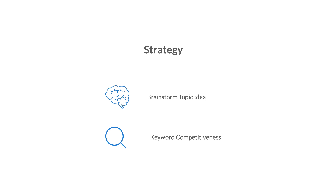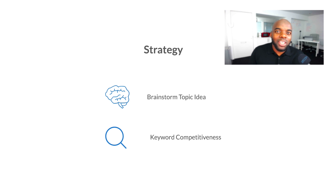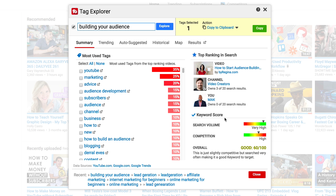Let's recap the strategy I now use to create my videos. First, brainstorm your ideas — this is very important. Some YouTubers just start creating videos, and that works if you have a large audience, but for those of us trying to build an audience we need to create videos people are actually searching for. The next step is keyword competitiveness analysis — you could choose a keyword that's too competitive to rank for, or one with low competition but no search volume. TubeBuddy gives you an indication of which keywords to go for: here the search volume is high and competition is manageable, giving an overall score of 60 out of 100.